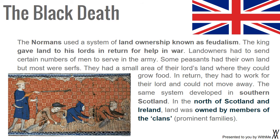The Normans used a system of land ownership known as feudalism. The king gave land to his lords in return for help in war. Land owners had to send certain numbers of men to serve in the army. Some peasants had their own land, but most were serfs. They had a small area of their lord's land where they could grow food; in return, they had to work for their lord and could not move away. The same system developed in southern Scotland. In the north of Scotland and Ireland, land was owned by members of the clans — prominent families.